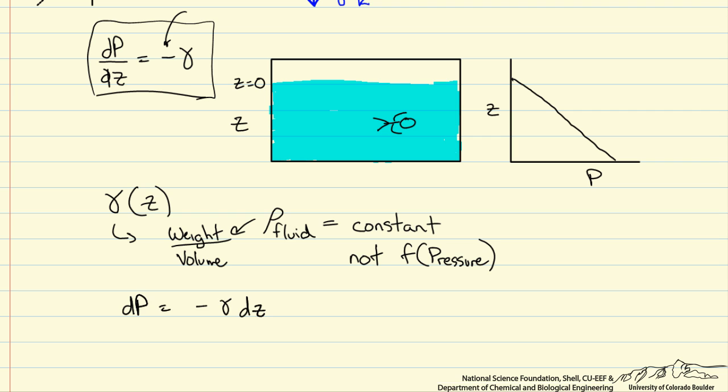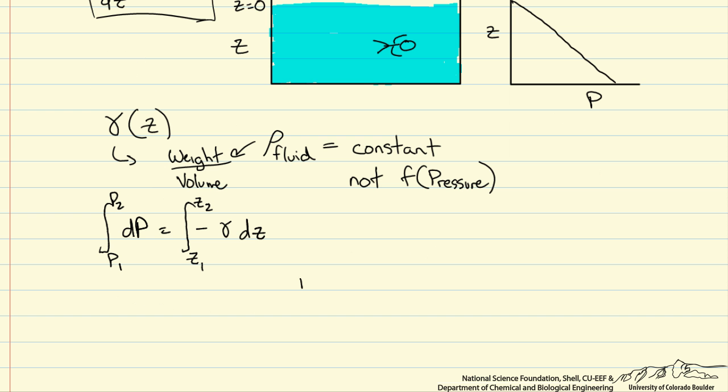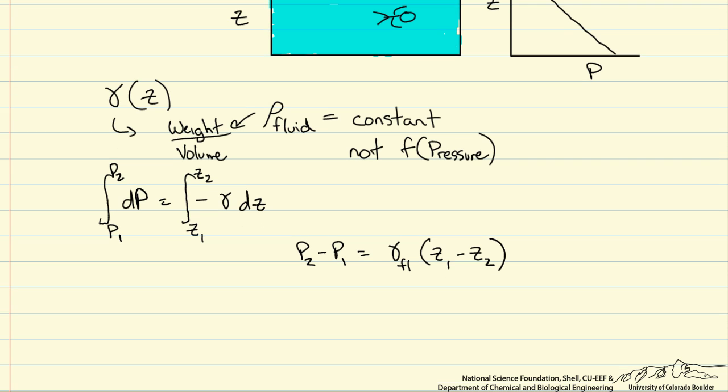We could separate variables and integrate. So if we integrate from say some z1 to some z2 and some p1 to some p2 we get p2 minus p1 is equal to the specific weight of the fluid, I'll put fl here for fluid, times the difference in elevation. Now I've taken out the negative sign and distributed it. Another way of writing this is the same thing is in this form and the reason this might be more common is typically our z2 is going to be a higher elevation. So we'll keep the right side positive.